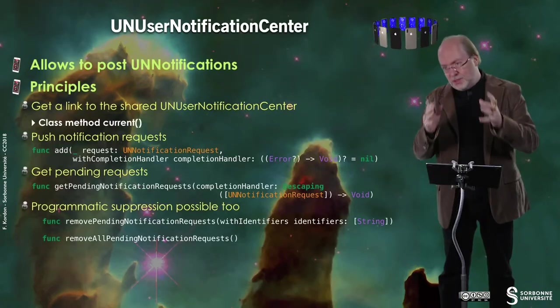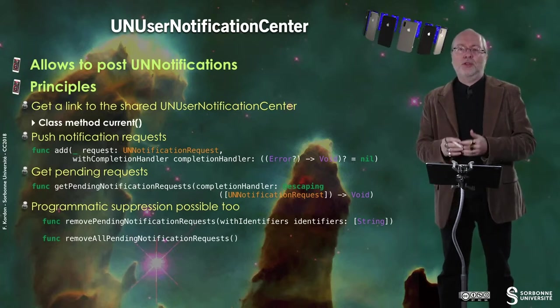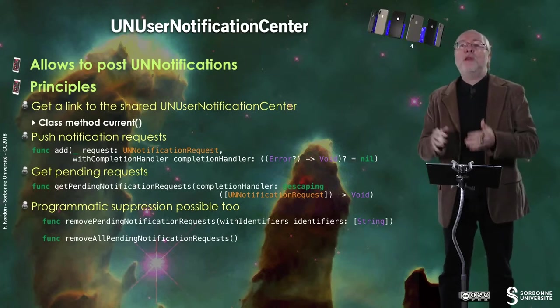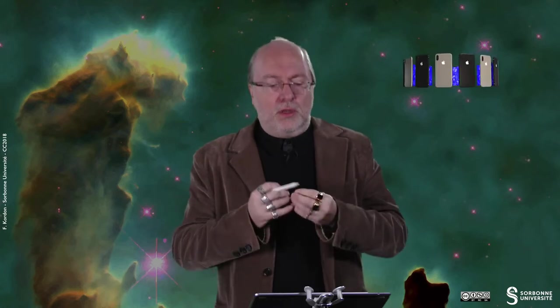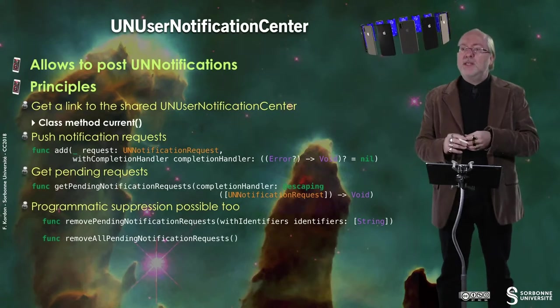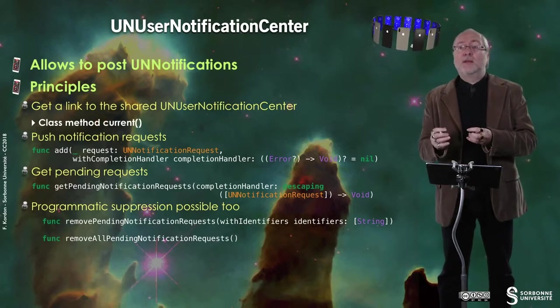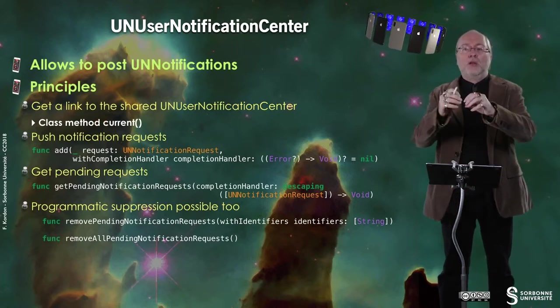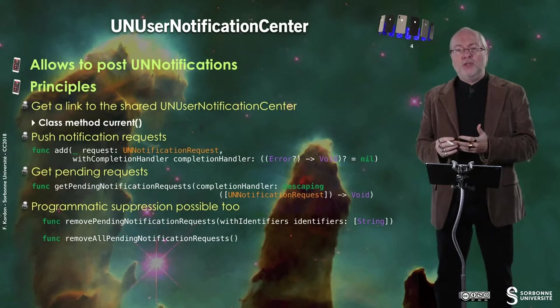You go through a notification center — not the default notification center we already studied in previous videos. Here you have to deal with the UN User Notification Center that allows you to post UN notifications, which are different from NS notification or notifications. The principle is: you have a shared notification center and you get a link to this shared notification center. It's a class method called current, and it means that this will be shared by several applications.